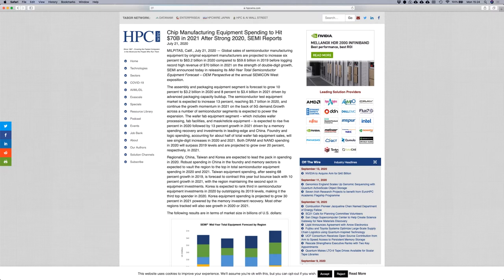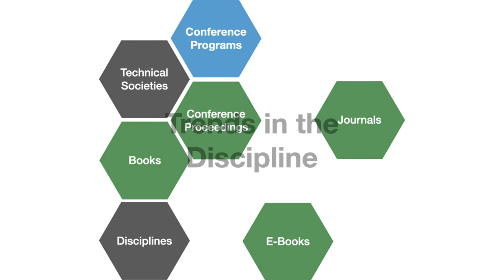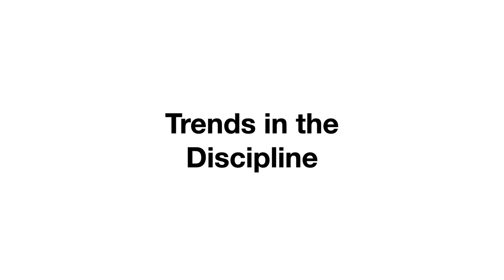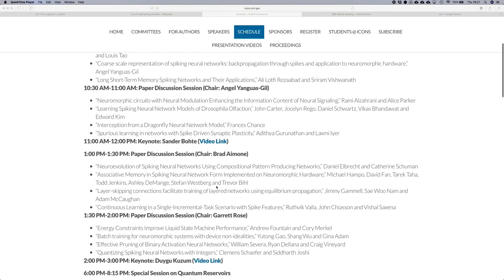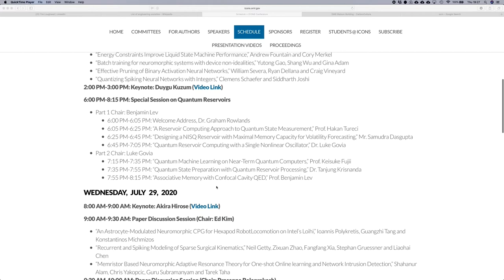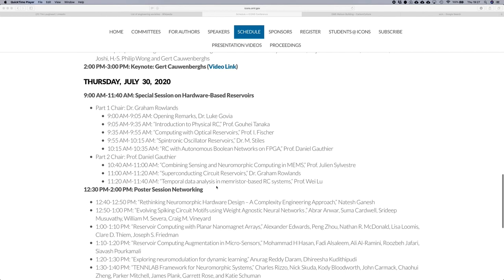If you're looking for trends within an academic discipline as well as industry, technical societies and the sub-societies that make them up can be good sources of information. These organizations cover every discipline, from the highly theoretical to the entirely applied. They run conferences and other events, publish journals and books, and often certify professionals. Another thing you can do is look for conferences. Even if you can't attend, the program can give you an idea of what is considered an important trend. For instance, the fact that there are two separate sessions related to reservoir computing suggests that this is an important emerging area.